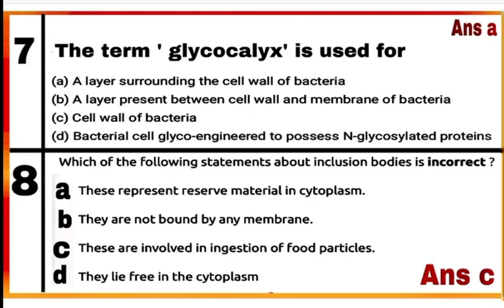Question 7: The term glycocalyx is used for option A. Glycocalyx is a layer surrounding the cell wall of bacteria. The cell envelope of bacteria has three layers: the outermost is glycocalyx, then the cell wall, and then the plasma membrane.